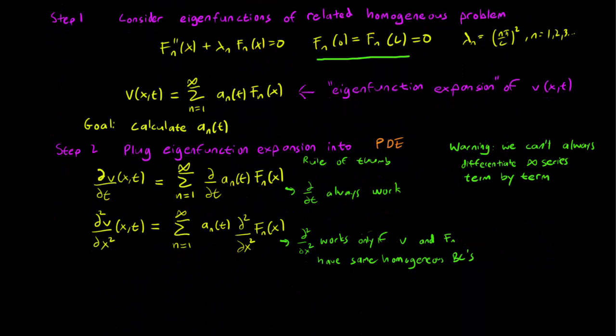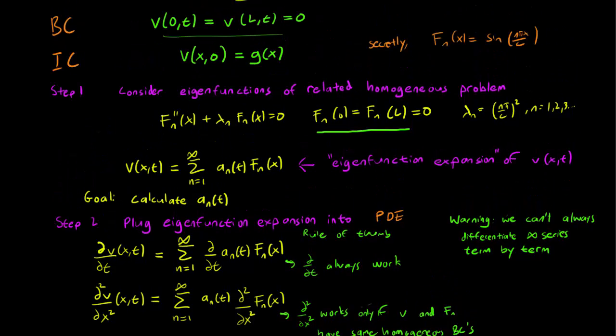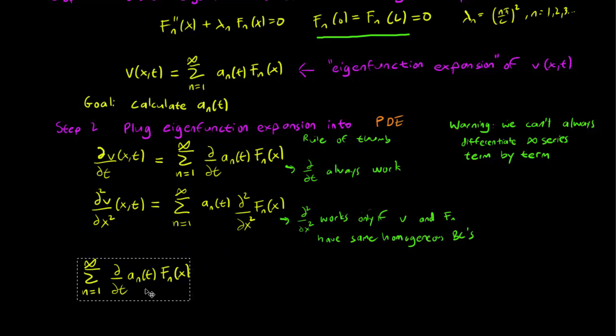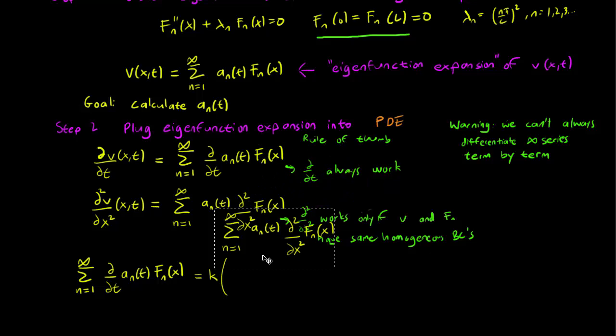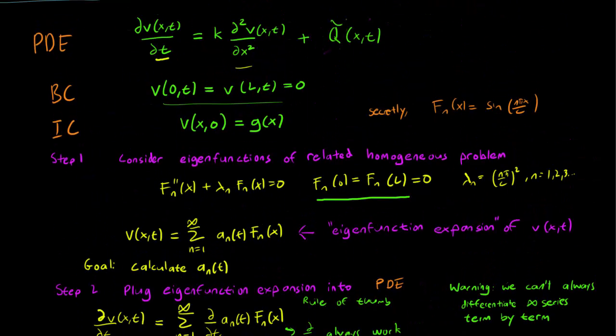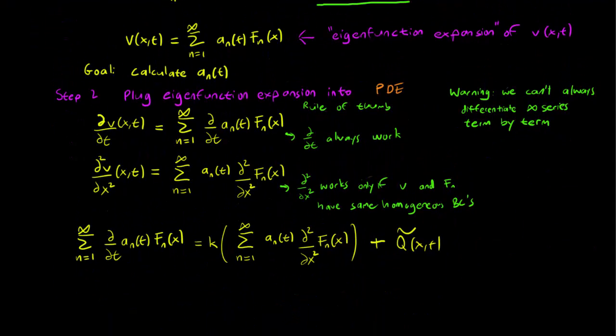So for our case we can do all this and we can just plug it in to our PDE. So we know our PDE says that dV/dt is equal to K times the second derivative with respect to x plus q tilde. Let's make sure that we're right. That's our PDE. dV/dt equals K*d²V/dx² plus q, and that's what we have here.